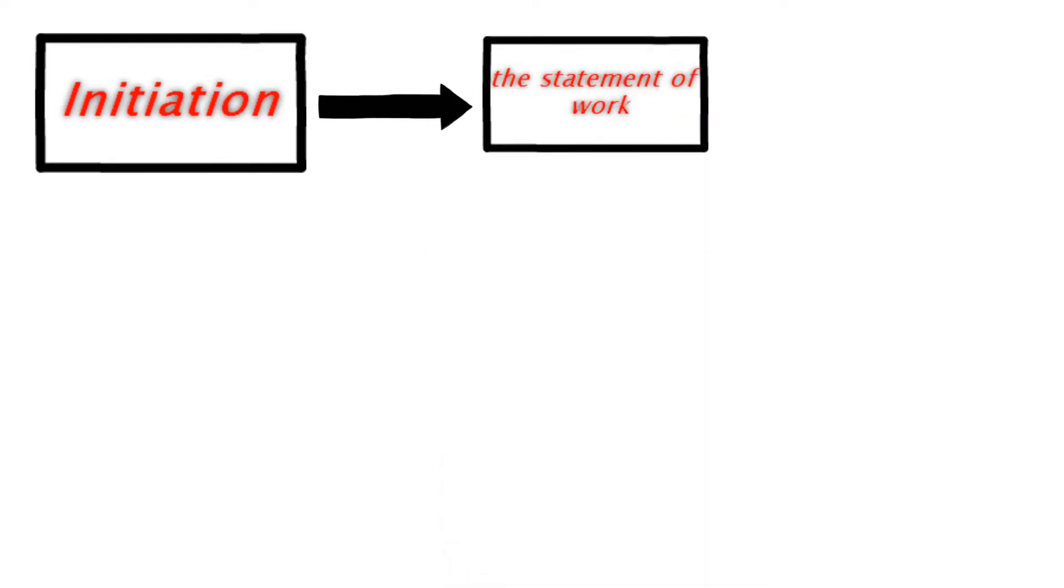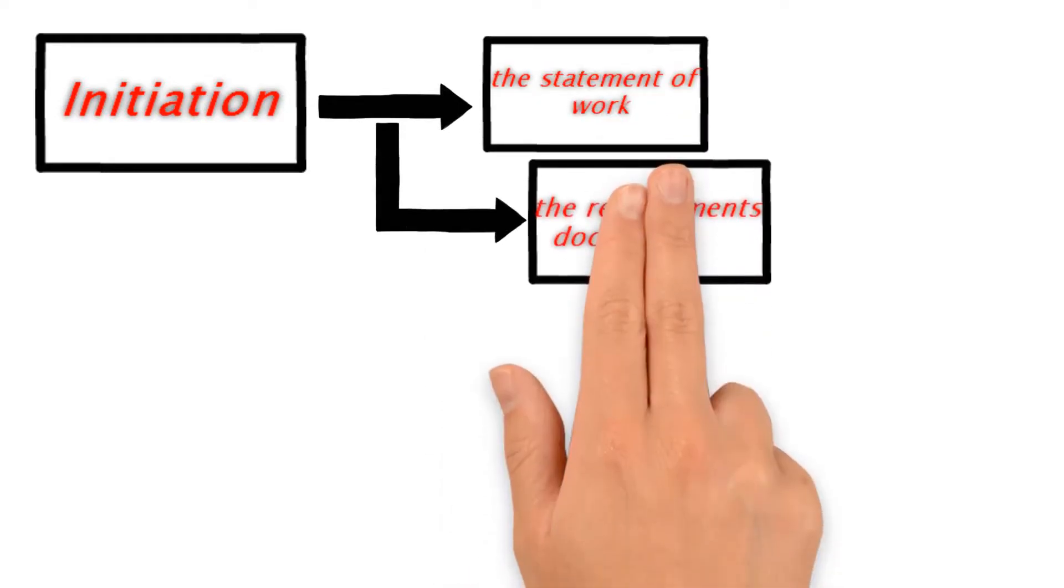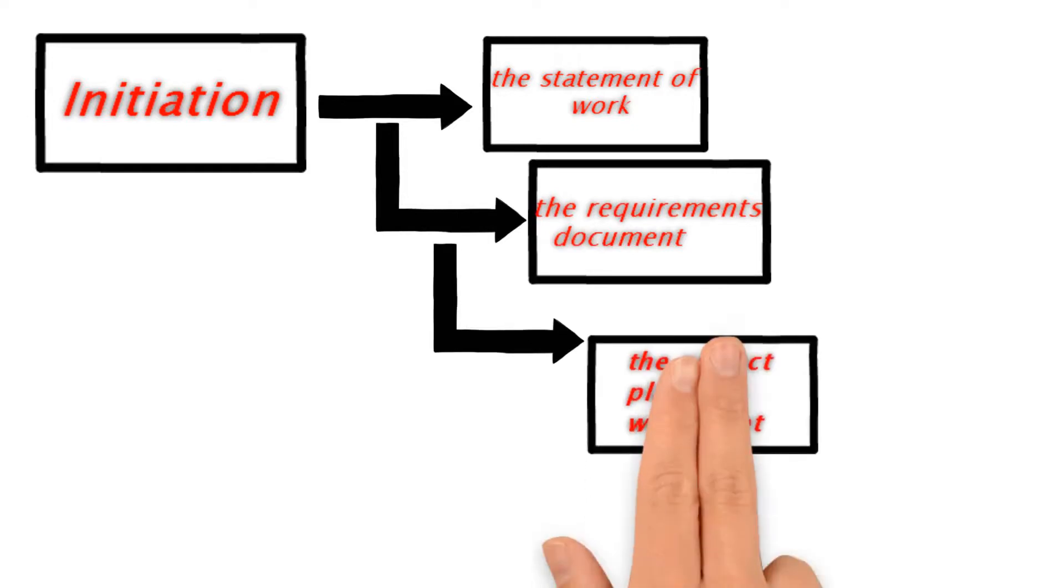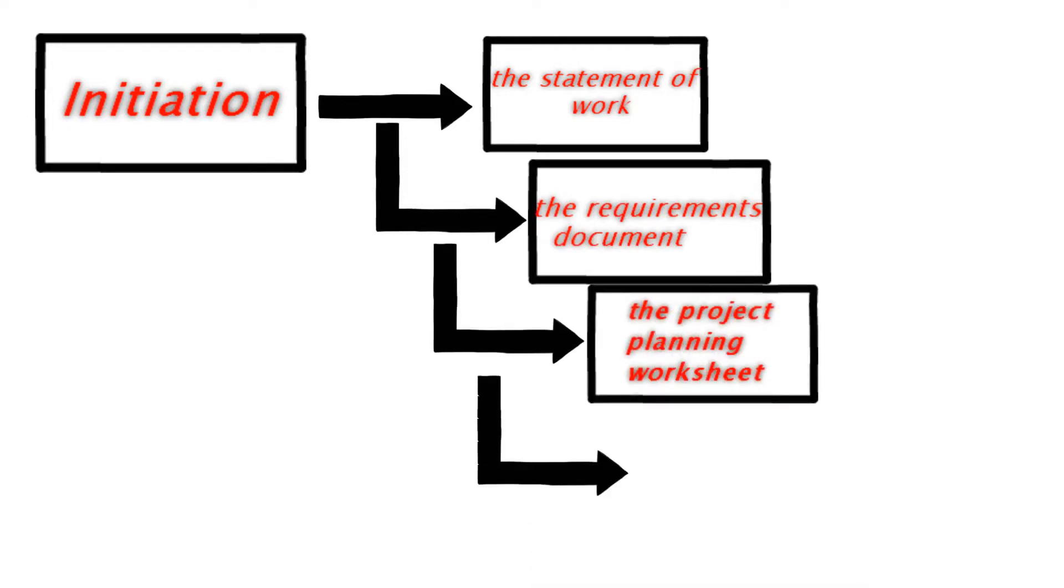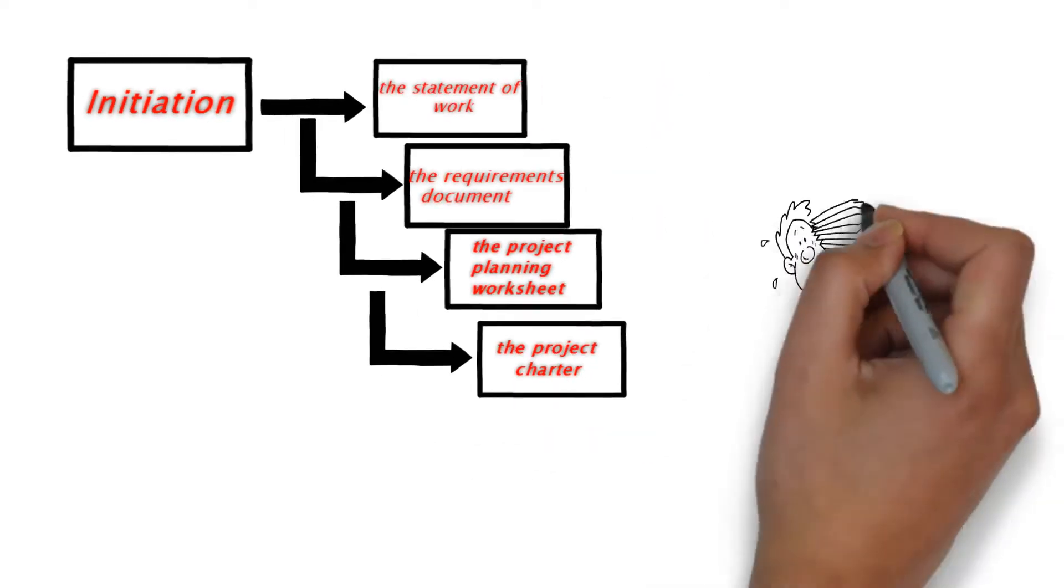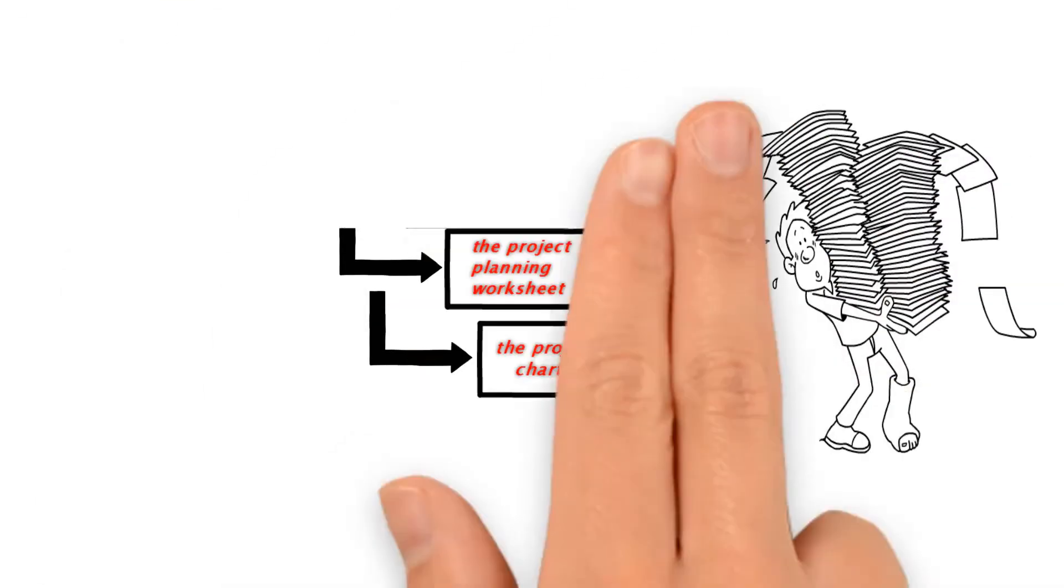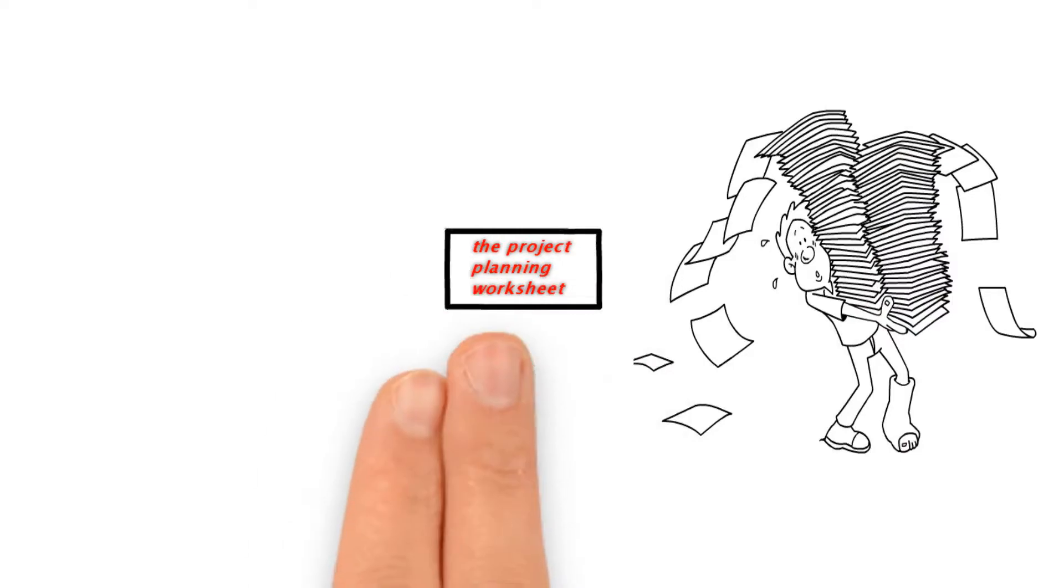These are the statement of work, the requirements document, the project planning worksheet, and the project charter. The statement of work defines what work will be done on the project and when it is scheduled to be done.